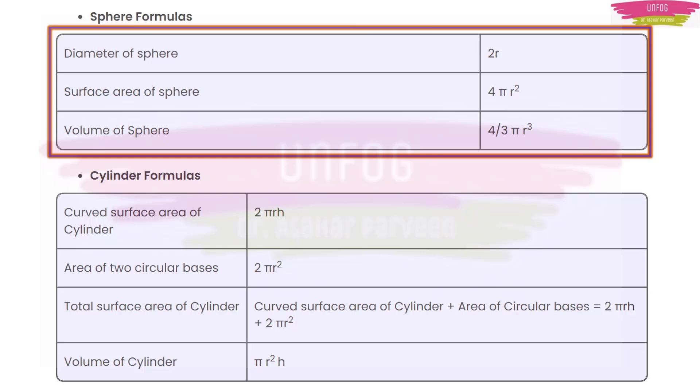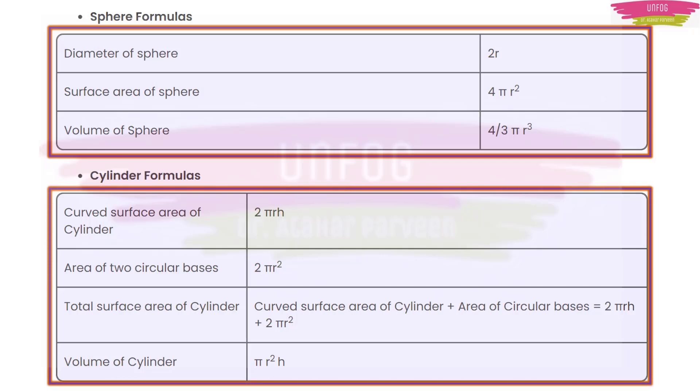Then we have sphere formulas, wherein you can see diameter is 2r. Area is 4πr² and volume is (4/3)πr³ for a sphere. Then you have it for a cylinder. It is 2πrh, the curved surface area. And area of 2 circular bases will be 2πr², and total surface area of cylinder will be curved surface area of cylinder plus area of circular bases, means 2πrh + 2πr², and volume of cylinder will be πr²h. Of course, h is the height of the cylinder.